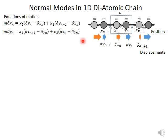Similarly, you write an equation of motion for the dark gray atom. For this atom, the restoring force to its right depends on kappa1 (not kappa2 as for the light gray atom), and the restoring force from the left depends on kappa2. This difference in spring arrangement is why you write two different equations of motion for the diatomic chain.